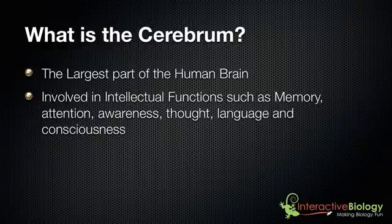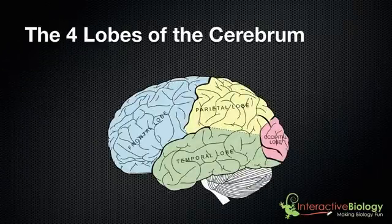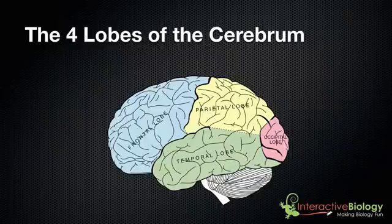These are the things that essentially make human beings human beings. The four lobes of the cerebrum are: the frontal lobe, the parietal lobe, the occipital lobe, and the temporal lobe. Let's look at what they're involved in.